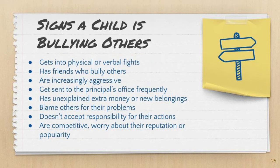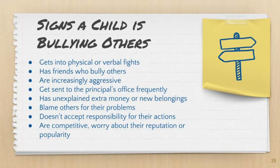What are some signs that a child is engaging in bullying behavior? They get into physical or verbal fights with others and have friends who bully other kids. Children who bully may become increasingly aggressive, get sent to the principal's office frequently, and may have unexplained belongings, extra money, or new toys brought home from school. They may blame others for their problems and not accept responsibility for their actions. They may be competitive and worry about their reputation or popularity, seeing their behavior as a way to gain popularity and increase their reputation.